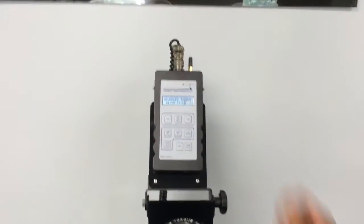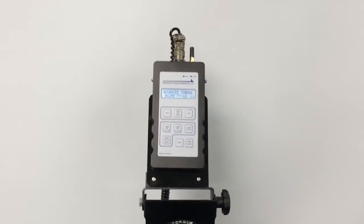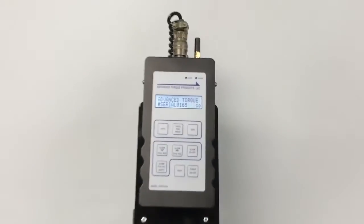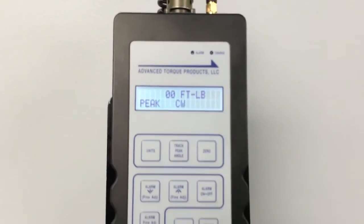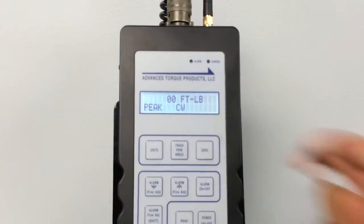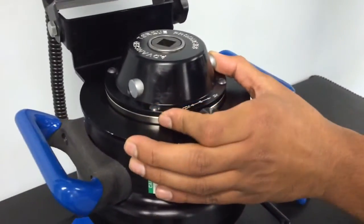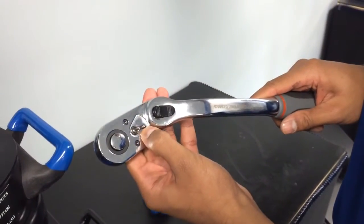Turn on the controller. Make sure the display is in peak mode. Check that you are using the proper units of measure. Then press the zero button to assure accurate measurement. Now, place the ratchet and the pawl into the counter-clockwise direction.